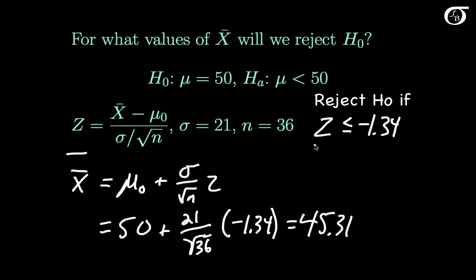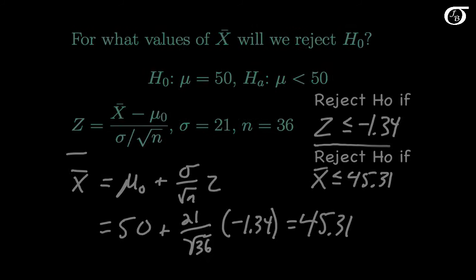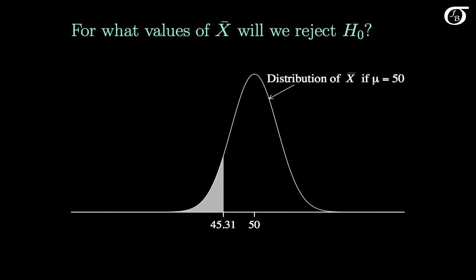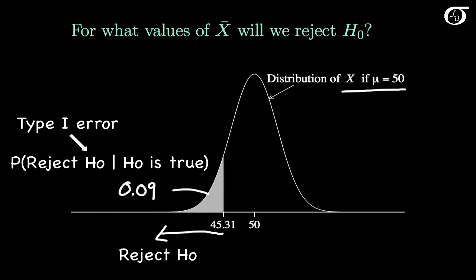We had the rejection region expressed in terms of z before, but now we can express it in terms of x-bar: we reject the null hypothesis if x-bar is less than or equal to 45.31. Visually, I've plotted the sampling distribution of x-bar if the null hypothesis is true. We reject if the sample mean is less than or equal to 45.31, and this area is the given alpha level of 0.09 — the probability of committing a type 1 error when the null hypothesis is actually true.